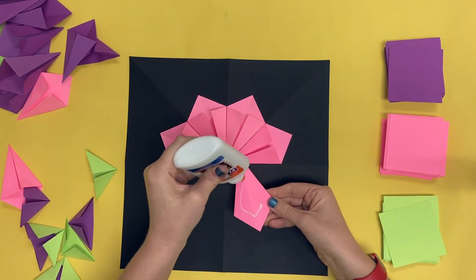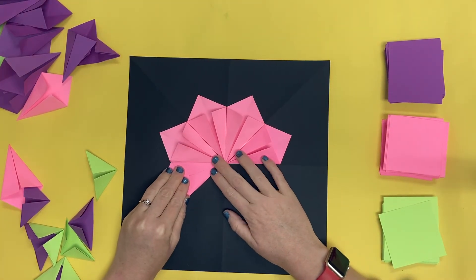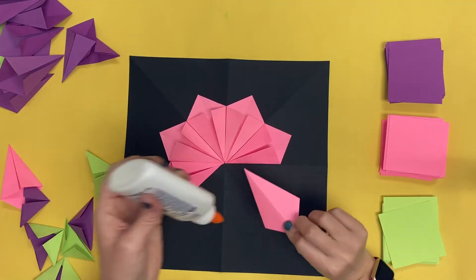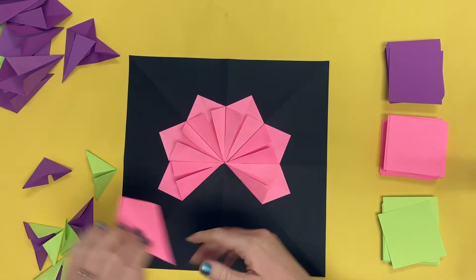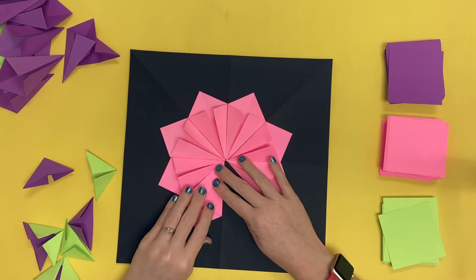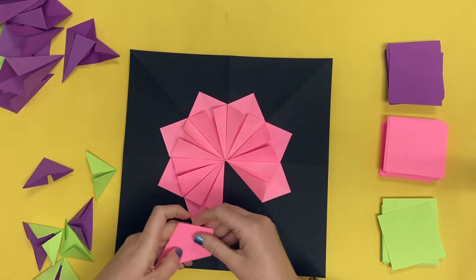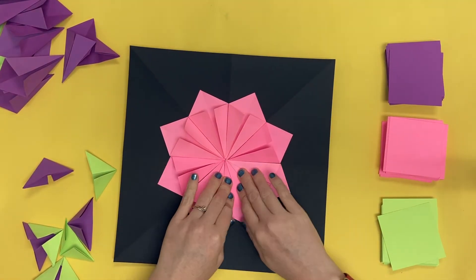When you glue down the hat fold it actually covers the space of two folded sections on the black paper so you will only need to make four to go all the way around the circle. I'm taking my time and gluing each one carefully and neatly. Remember craftsmanship counts. That looks good.